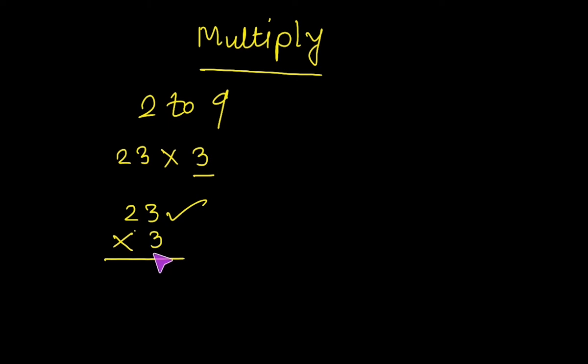At first, we calculate 3 ones by 3. 3 times 3 equals 9. That's why we write 9 in the ones place.